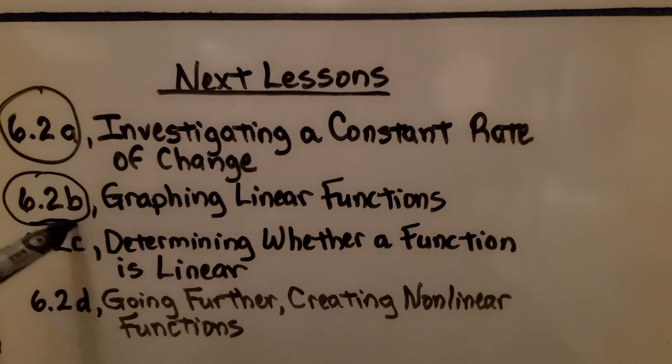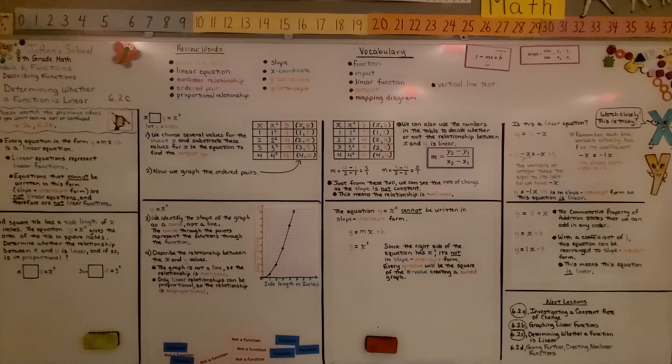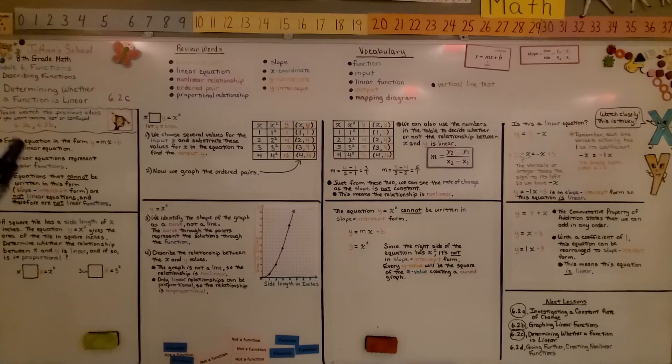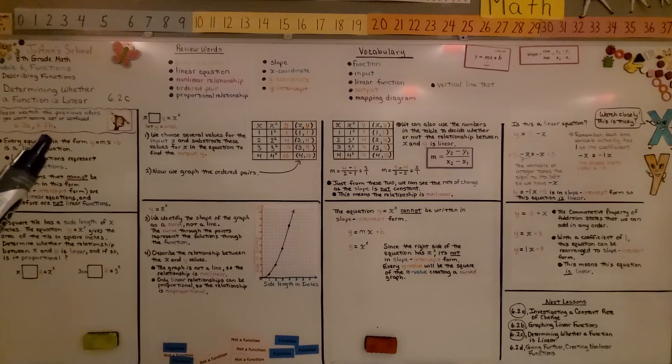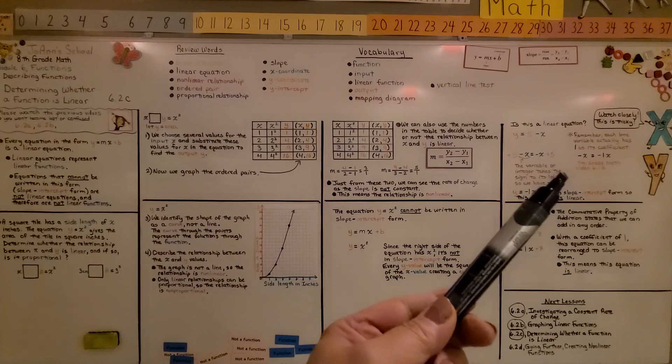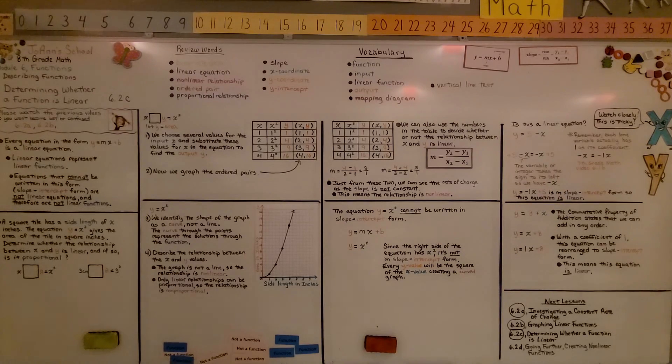We're finished with part c. We're going to move on to the last part, 6.2d, which is after the lesson in the going further section, creating non-linear functions. If any part of this lesson confused you, go back and watch 6.2a, 6.2b, or that seventh grade math video 6.1b, and hopefully that will help you. Have a great day and join me for the last part of the lesson.